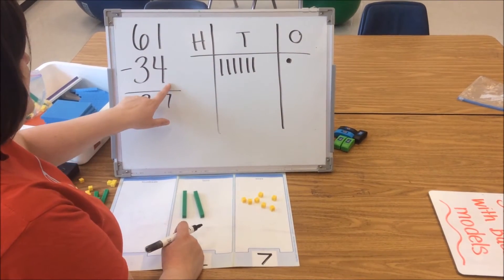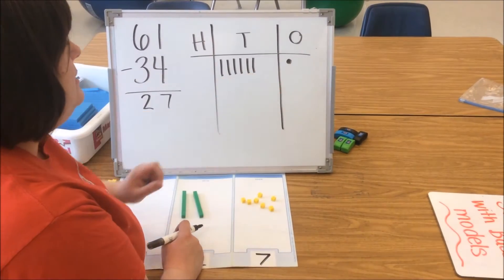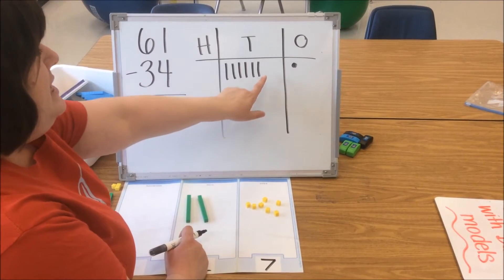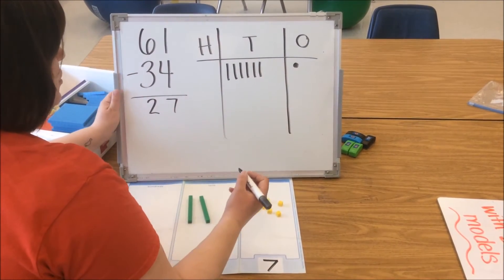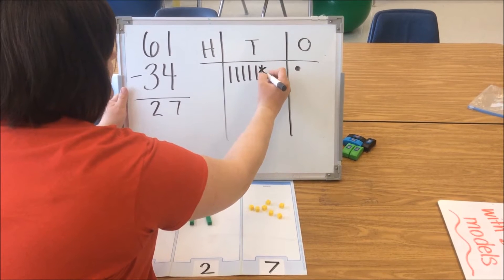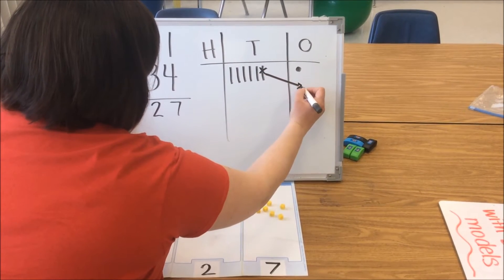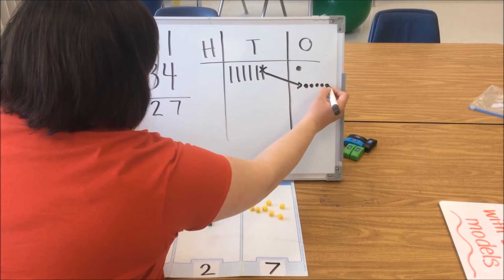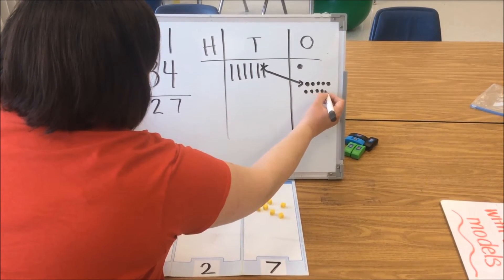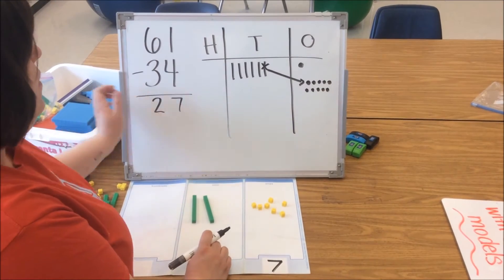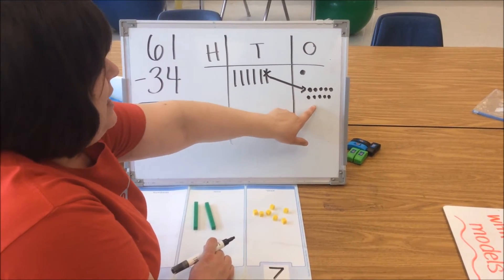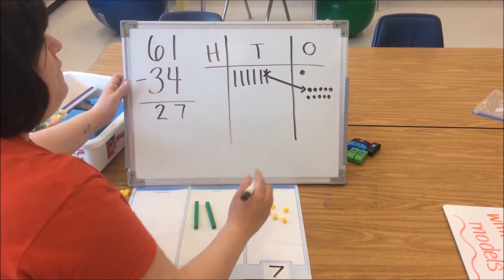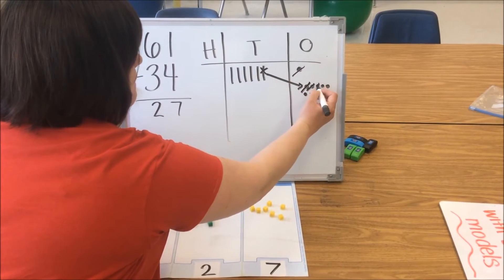We go to our next number and we need to subtract 4 ones. We don't have enough ones in our ones column, so we're going to decompose a 10. Students draw this in school by crossing off a 10 and making 10 ones: 1, 2, 3, 4, 5, 6, 7, 8, 9, 10. So this 10 has been decomposed. We have added 10 ones in our ones column. Now we're going to take away those 4 ones: 1, 2, 3, 4.